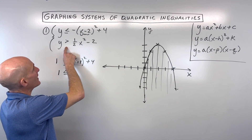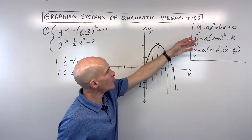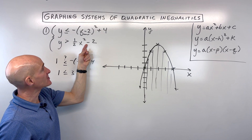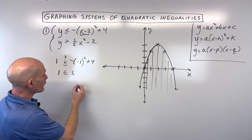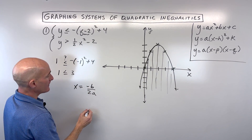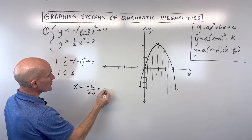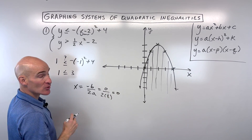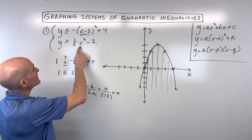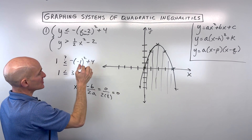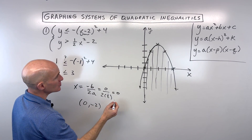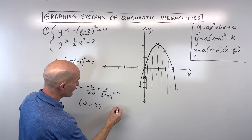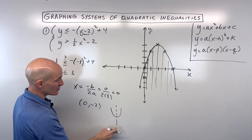For the second quadratic, you can see this is basically in the general form — ax squared plus bx plus c — and the b value, the number in front of the x, is zero since we don't have an x term. So you can use the formula negative b over two a. In this case b is zero, so we get zero over two times one half, which is still zero. That means the x coordinate of our vertex is zero. Plugging that back in, y is going to be negative two. So our vertex is at (0, negative two).